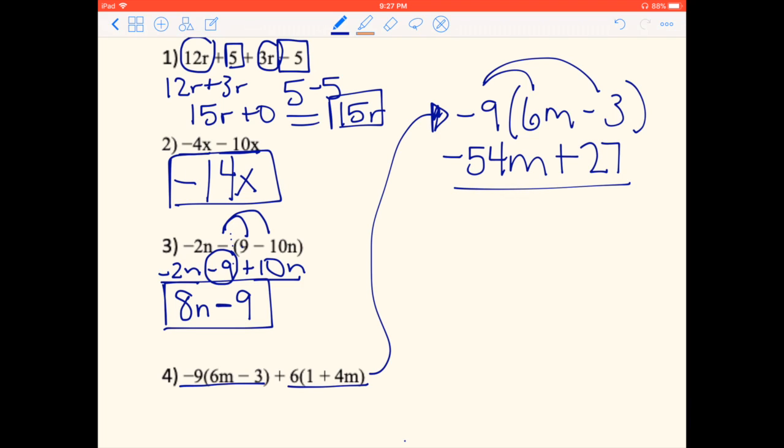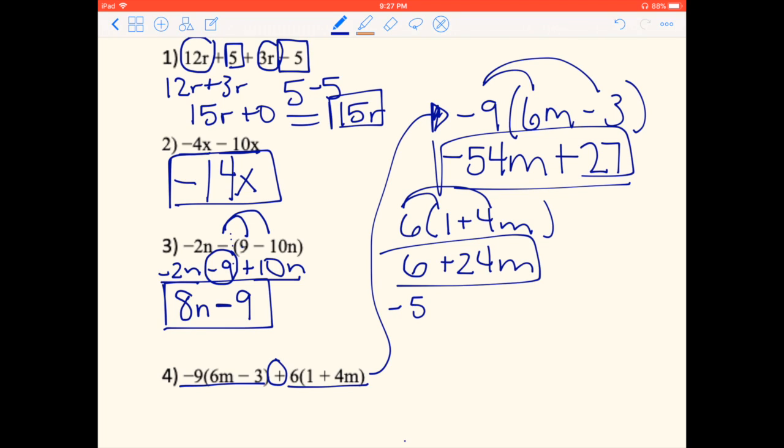I'm going to take this part, and I have 6 times 1 plus 4M, again distributing 6 times 1 and 6 times 4M. So 6 times 1 is 6, and 6 times 4M is 24M. So now I have these two parts and I'm going to combine them now with that plus sign in the middle. So I have negative 54M plus 27 plus this part right here, 6 plus 24M.